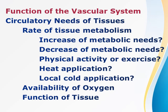If the blood vessels fail to dilate despite increased metabolic need, tissue ischemia will occur because the oxygen and metabolic needs of the body are not being met. Normally, when there is an increased metabolic need, blood vessels should dilate; failure of dilation leads to tissue ischemia.